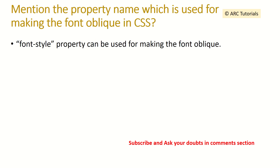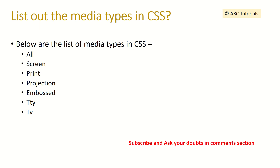The next question is: what is the name of the property used for making a font oblique in CSS? To make any font oblique, we use the 'font-style' property.